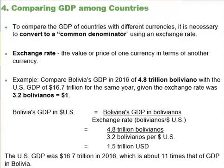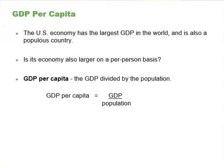The US GDP was 16.7 trillion dollars in 2016, about 11 times that of Bolivia. The US economy has the largest GDP in the world by a considerable amount. The United States is also a populous country. If we are trying to compare standards of living, we need to divide GDP by population — this is called GDP per capita.